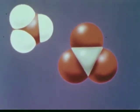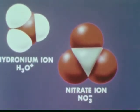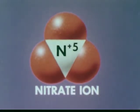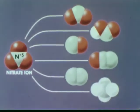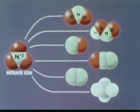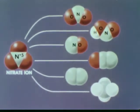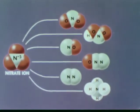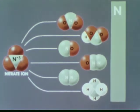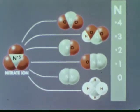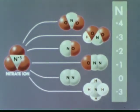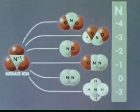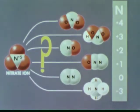Nitric acid in water solution exists largely as hydronium and nitrate ions. In both nitric acid and the nitrate ion, the nitrogen atom has an oxidation state of plus five. It can be reduced to a number of products, such as NO2, HNO2, NO, N2O, N2, NH4+, and many others. The nitrogen in these products ranges in oxidation state from plus four to minus three. In most nitric acid reactions, several of these products form, but usually one reaction predominates. How do we predict which reaction will predominate and which products will result?